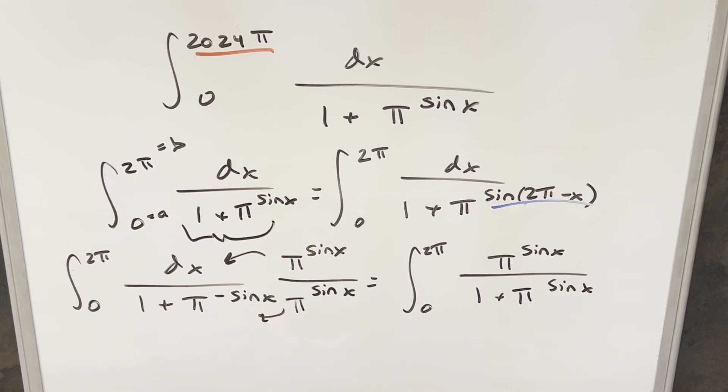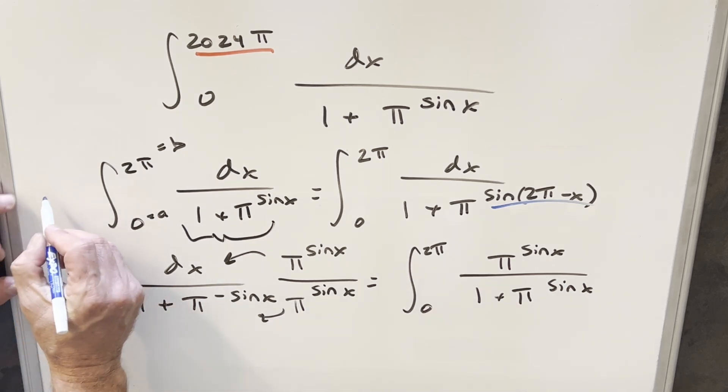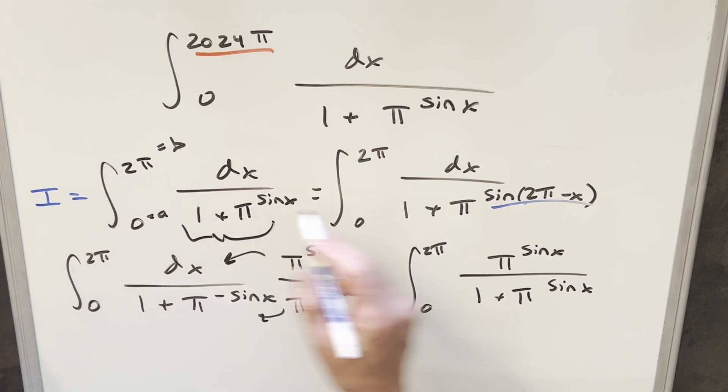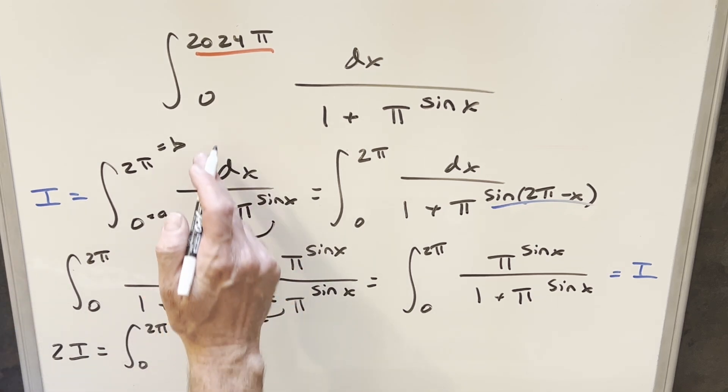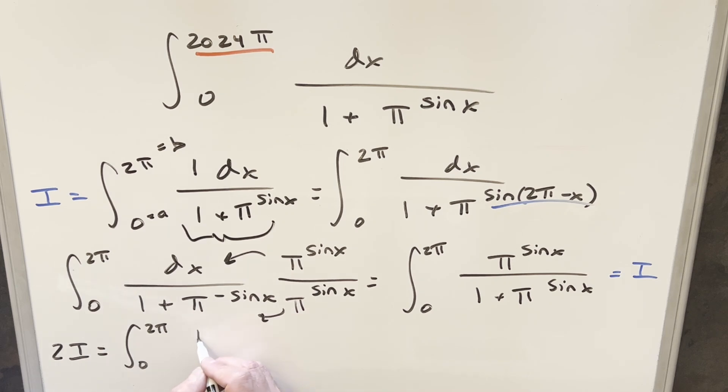And so now what I want to do is I want to add this one back to this one. So I'm going to put some labels on this. If I call this one i, everything's going to be i down here. So adding this copy and this copy, we're going to end up with 2i. And then that's just going to be going from 0 to 2π. Think of it like a 1 in the numerator here. 1 plus π sine x gives me 1 plus π sine x. And then our denominator is the same in both cases. 1 plus π sine x. But then numerator and denominator are the same. Cancel this with this. Now we're just integrating 1.